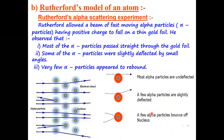Next came Rutherford's model of an atom. He performed an alpha particle scattering experiment using a gold foil. Alpha particles are positively charged helium ions — when helium loses its 2 electrons, it retains only 2 protons, forming an alpha particle. Rutherford allowed a beam of fast-moving, positively charged alpha particles to fall on a thin gold foil. Why gold? Because gold is highly malleable and can easily be converted into thin sheets.